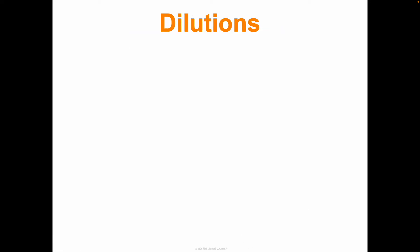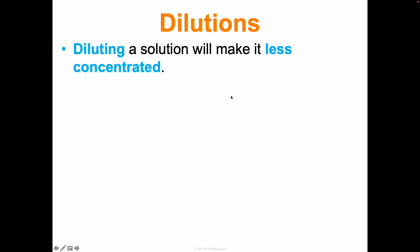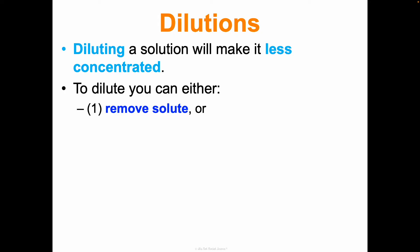Diluting a solution makes it less concentrated. If something is too strong or too concentrated, we dilute it to lower the concentration. There are two ways to dilute: you can remove solute so there's a greater ratio of solvent to solute, or you can add more solvent. Think about it practically - it's much easier to add more solvent. So that's what we'll be doing, and our equation for dilutions is M1 × V1 = M2 × V2.